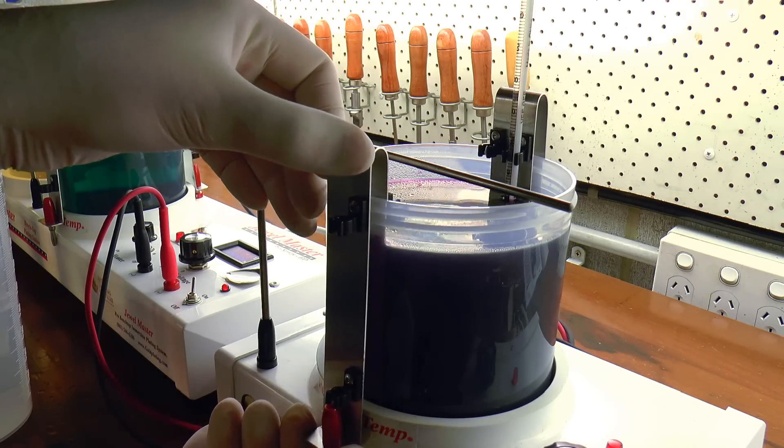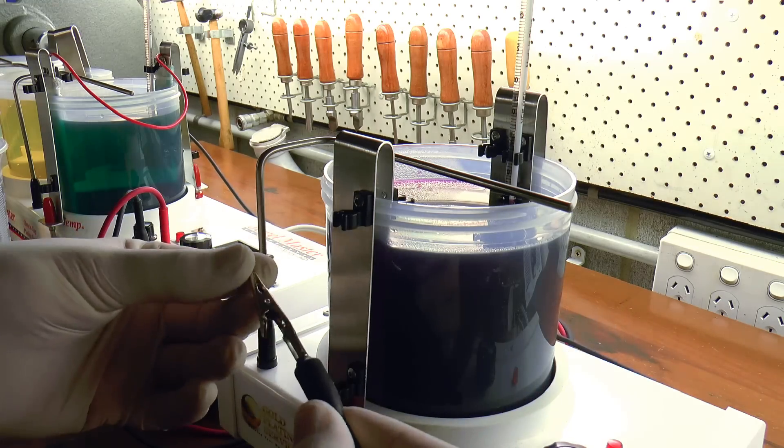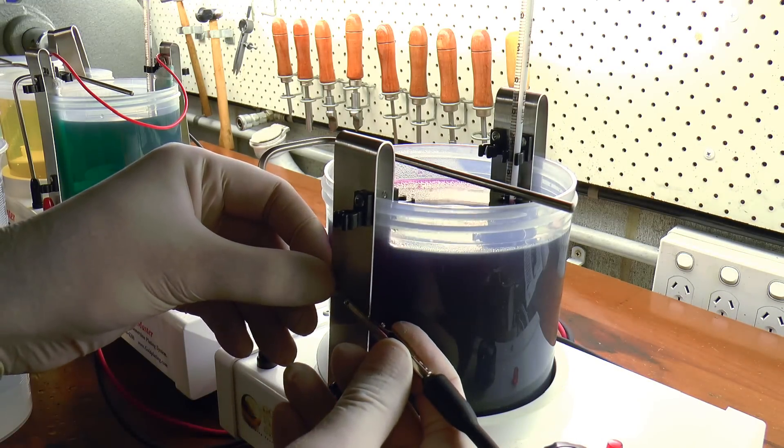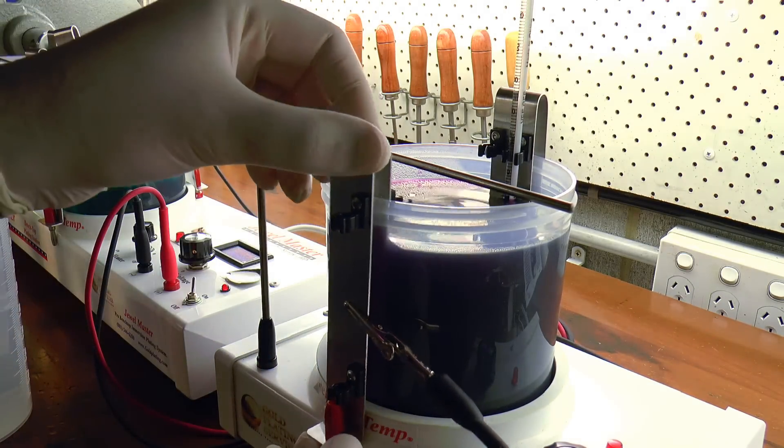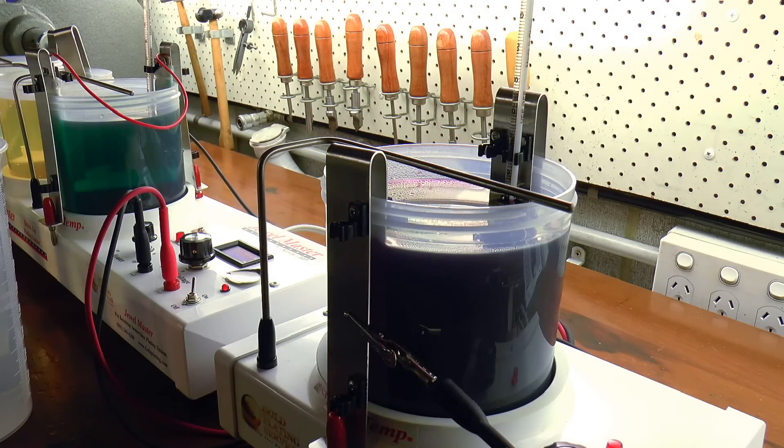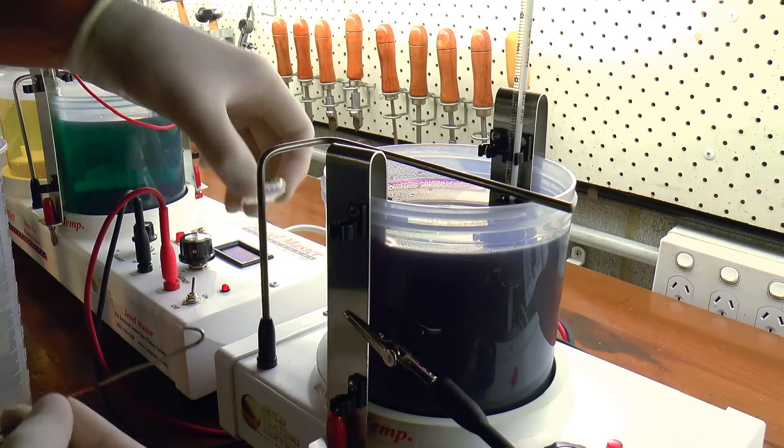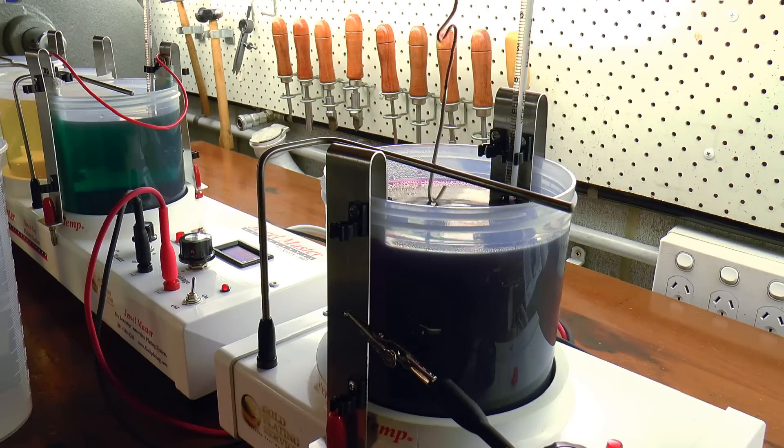With the general rule being that the anode area should roughly equal the part area. Again it's a simple case of running a lead to another anode and then dropping it into the other side of the bath.